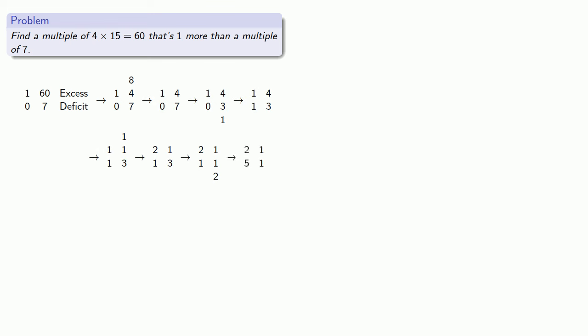We read our last table: 2×60s is 1 more than a multiple of 7. So for every unit remaining when dividing by 7, we set down 2×60s, 120.